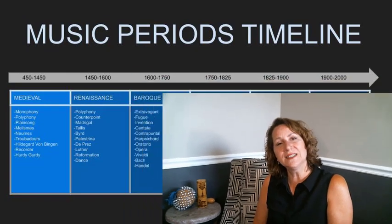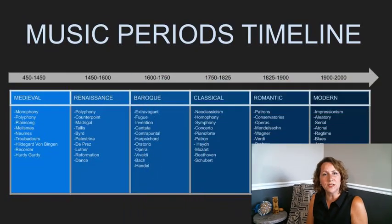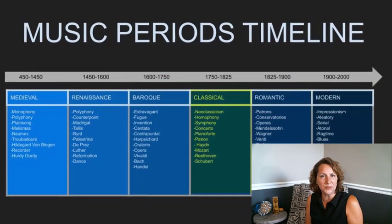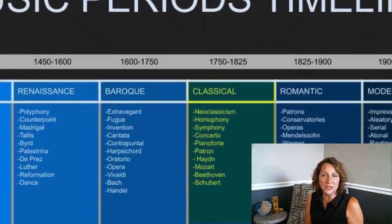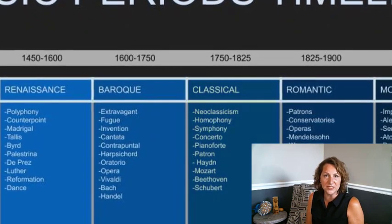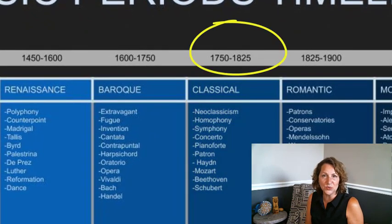Hello there and welcome to Music Lessons with Mrs. Morris. Today we are going to learn about a time in history known as the Classical Period. The Classical Period falls between the Baroque and the Romantic Period, with most of the music being composed between 1750 and 1825.